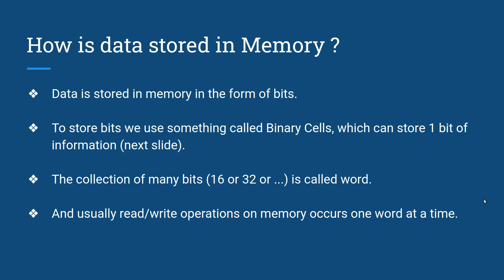How is data stored in memory? Data is stored in memory in the form of bits. To store bits we use something called binary cells, which can store one bit of information. The collection of many bits (16 or 32 or more) is called a word, and usually read and write operations in memory occur one word at a time.